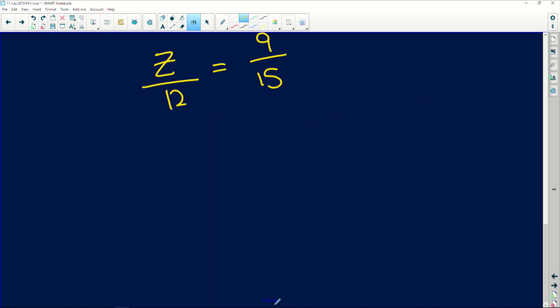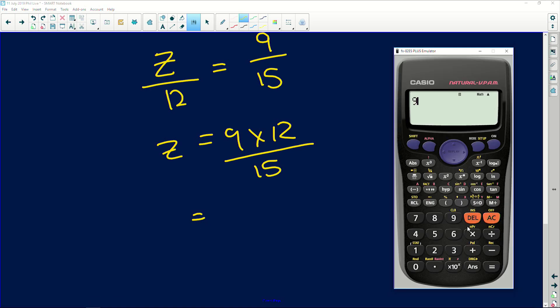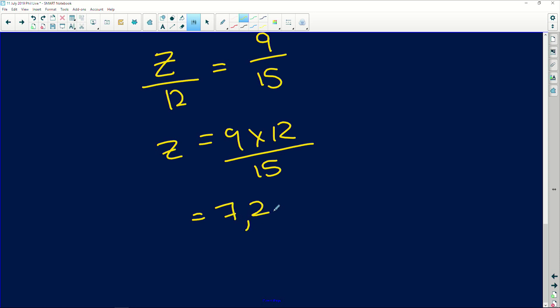So that means that z is equal to 9 times 12 over 15, which gives us, let me get up my calculator, 9 multiplied by 12 divided by 15 and we get 7.2. Okay. So that is an expression for z.